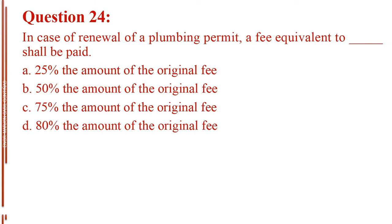Question number 24. In case of renewal of a plumbing permit, a fee equivalent to blank shall be paid. Letter A, 25% the amount of the original fee. Letter B, 50% the amount of the original fee. Letter C, 75% the amount of the original fee. Letter D, 80% the amount of the original fee.